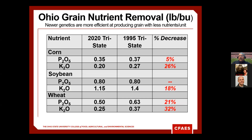Grain nutrient removal has decreased across the board because modern hybrids and varieties are more efficient — they don't need as many nutrients to produce yield. Soybean phosphorus removal stayed roughly the same, but potassium removal took a significant drop across all crops. That means we're not removing as many nutrients at harvest, which saves on fertilizer. It's interesting to see how modern hybrids have effectively changed our removal rates over the past 20 years.